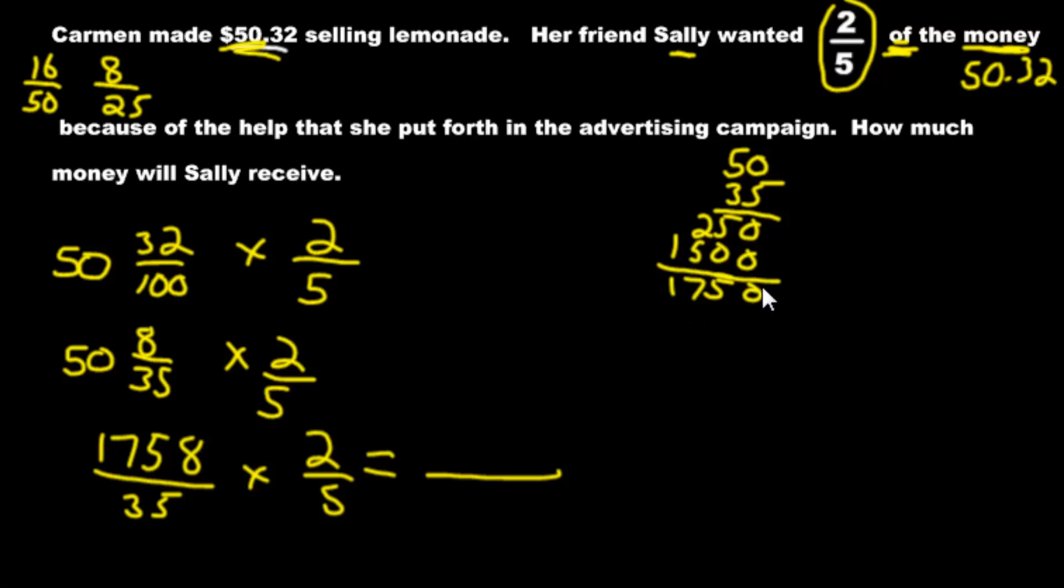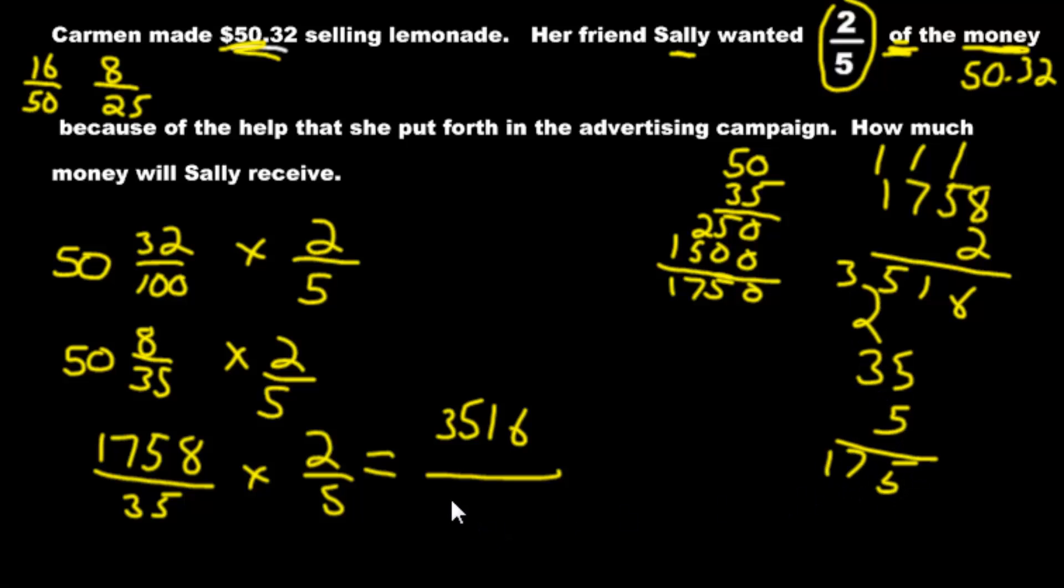We do this. We're going to get 1758 multiplied by 2. Put the 2 down here. We're going to get 16, 11, 15, 3. 3, 5, 1, 6. And then the denominator is going to be 35 and 5. So quickly multiply that. We're going to get 25. We're going to get 15, 16, 17, 175.